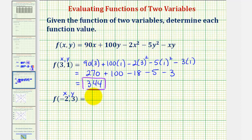So for 90x, we'd have 90 times negative two, plus 100y would be 100 times three, minus two times x squared, that'd be minus two times negative two squared, minus five times y squared would be minus five times three squared. And then finally, minus x times y would be minus negative two times three.